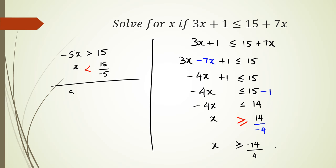However, if it was positive 5, if it's positive 5x greater than 15, then the symbol stays the same as it is. So see, the symbol actually stays in the same direction. The only time it changes direction is when you divide by a negative number. And that's basically it, guys, for solving inequalities.